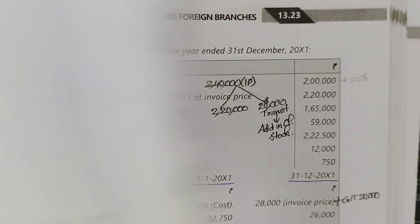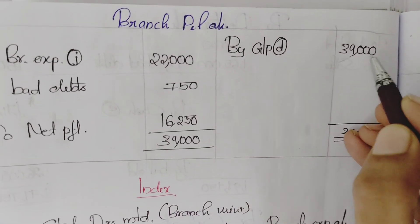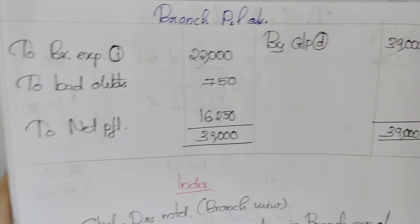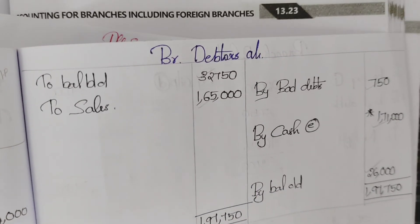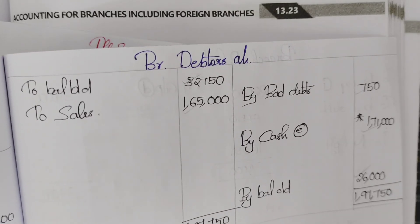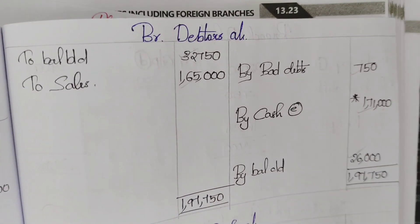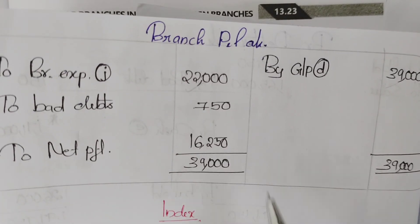P&L account is prepared. Branch adjustment account: gross profit brought forward, branch expenses brought forward. Bad debts are also recorded in the P&L account. The balancing figure of the P&L account gives the net profit.